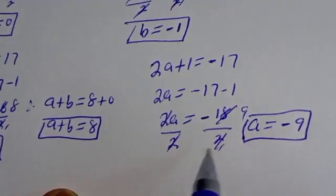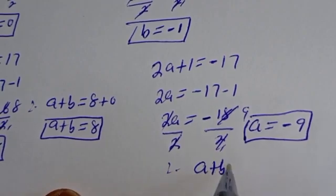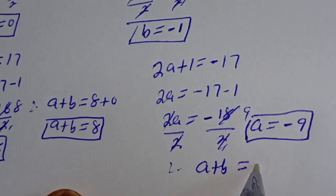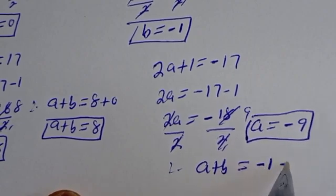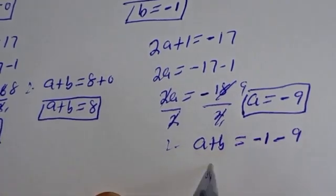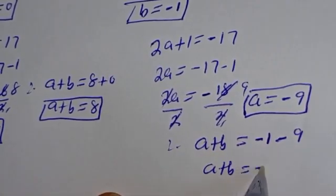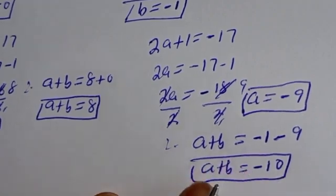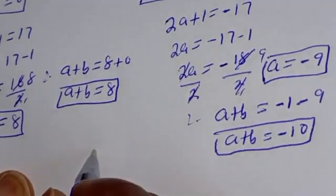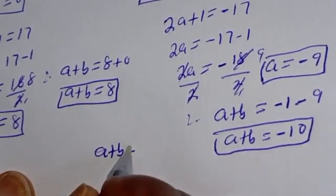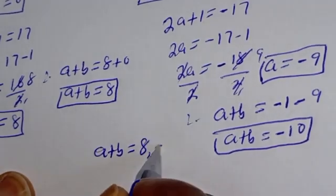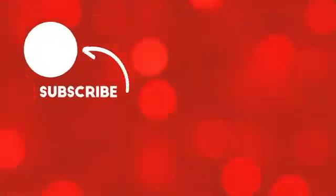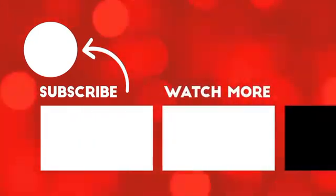Dividing by 2, a is equal to minus 9. Therefore, a plus b is equal to minus 9 plus minus 1, so a plus b is equal to minus 10. This is also a value of a plus b. Therefore, our final answers are a plus b equals 8 and a plus b equals minus 10.